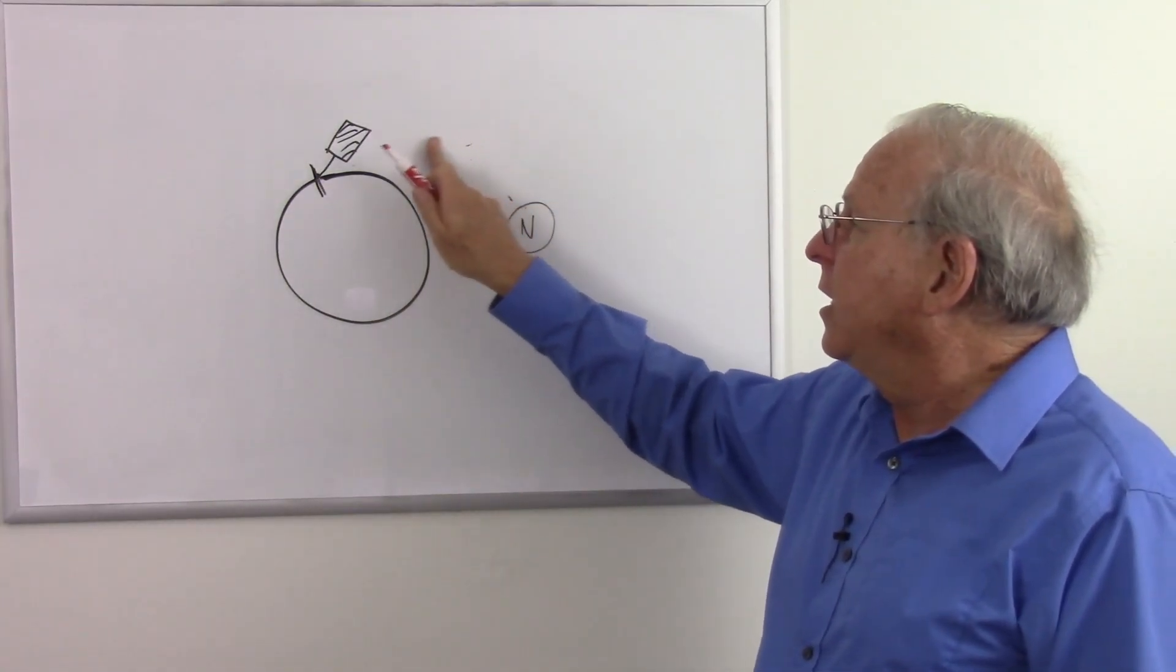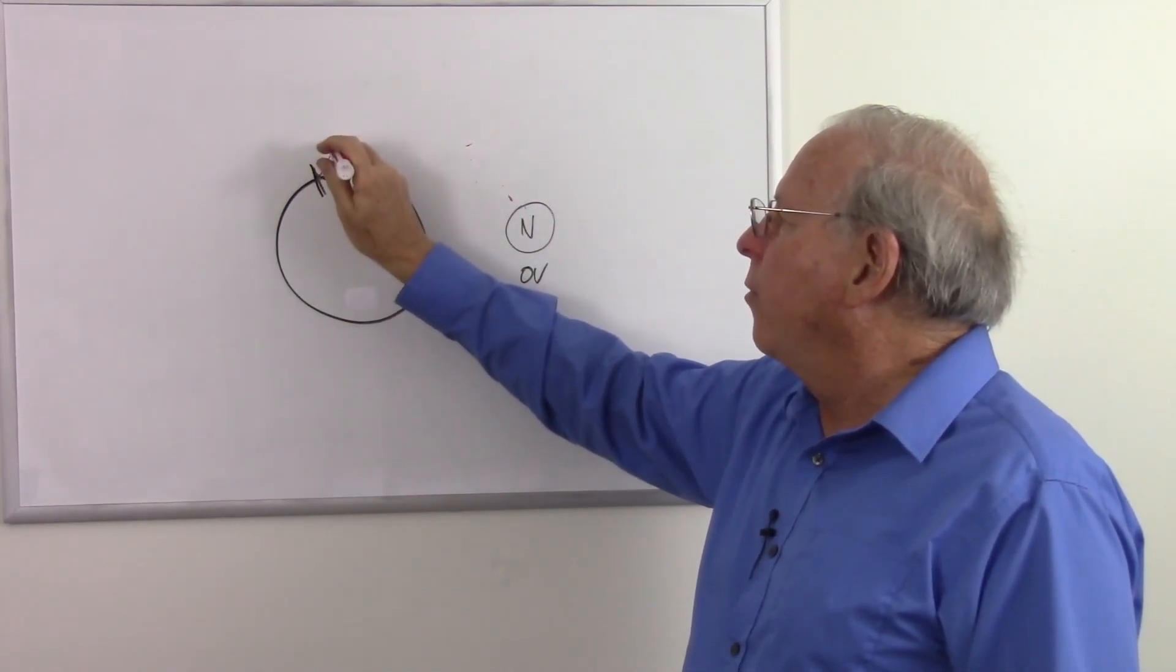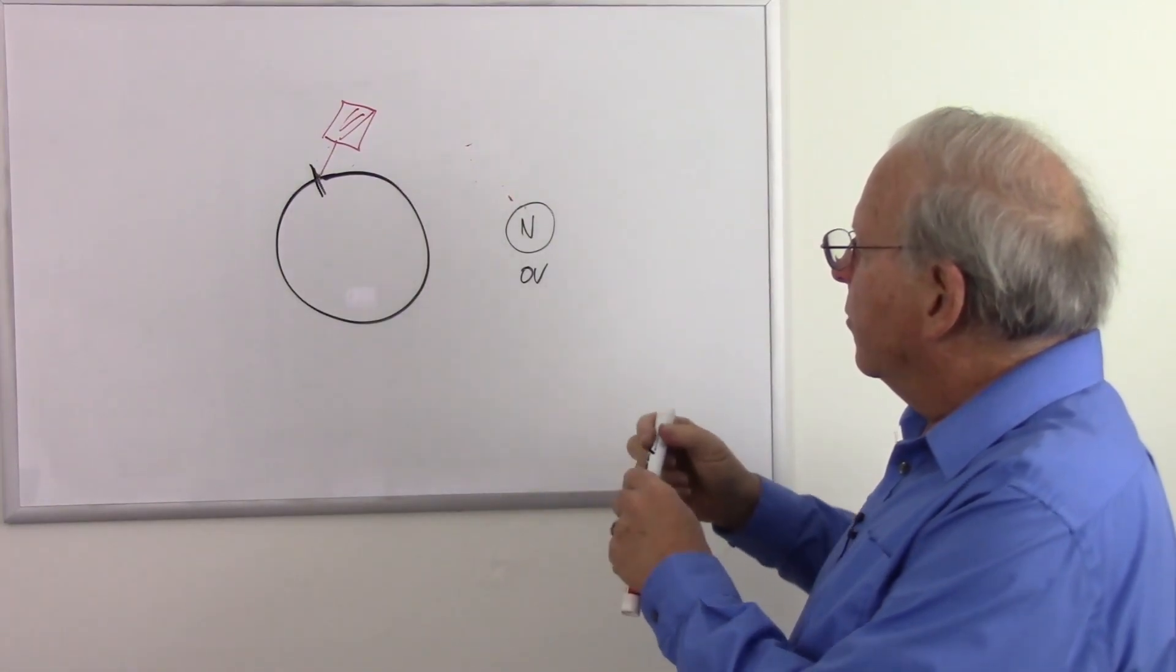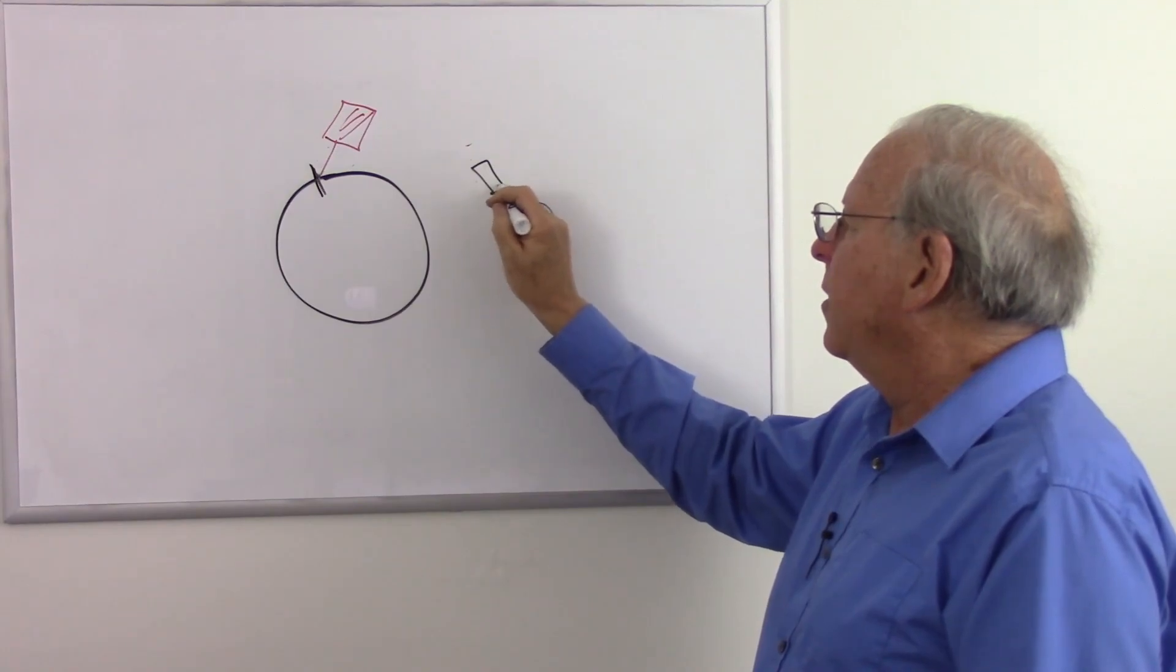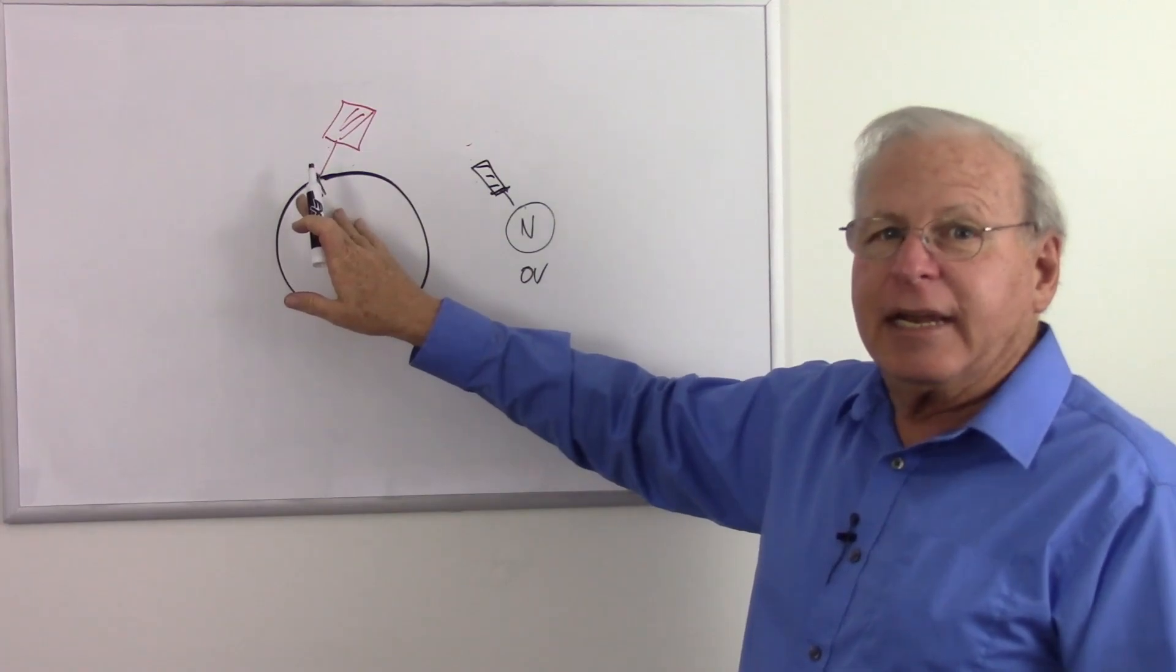But if we reverse the leads or the probes, put the red probe on the Earth and the black probe over on this neutral body, by definition, we have just determined or defined the neutral body as zero volts and the Earth will read something negative.